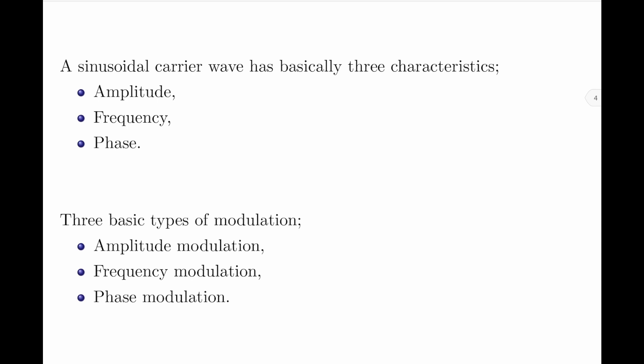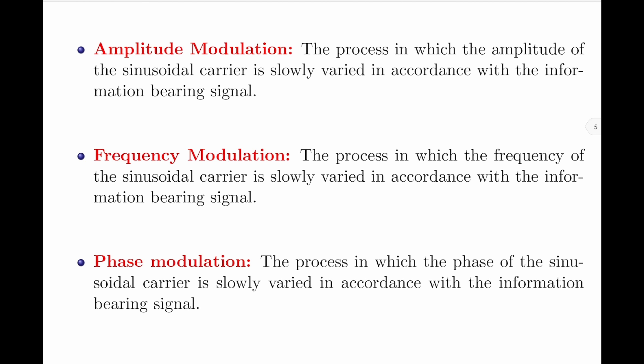Let us now define these modulation types, starting with amplitude modulation. Amplitude modulation is the process in which the amplitude of the sinusoidal carrier is slowly varied in accordance with the information bearing signal. Therefore, in amplitude modulation, the carrier amplitude is varied in accordance with the information bearing signal.